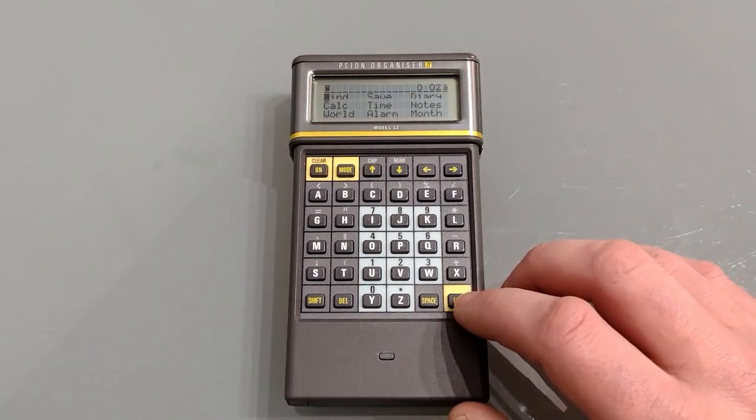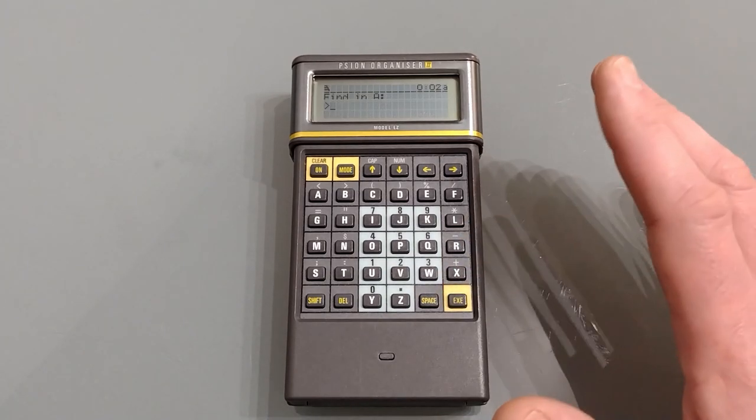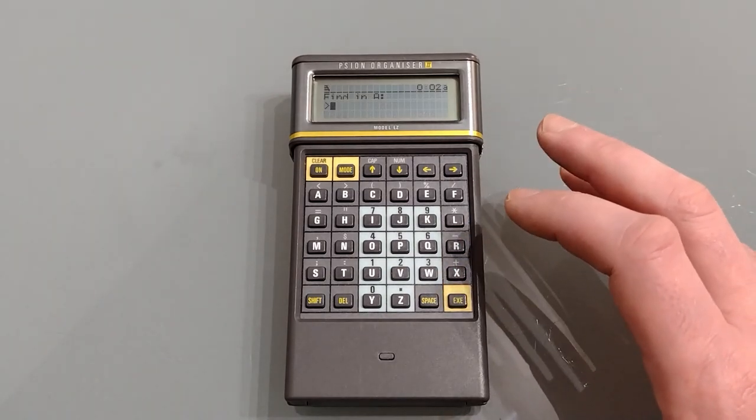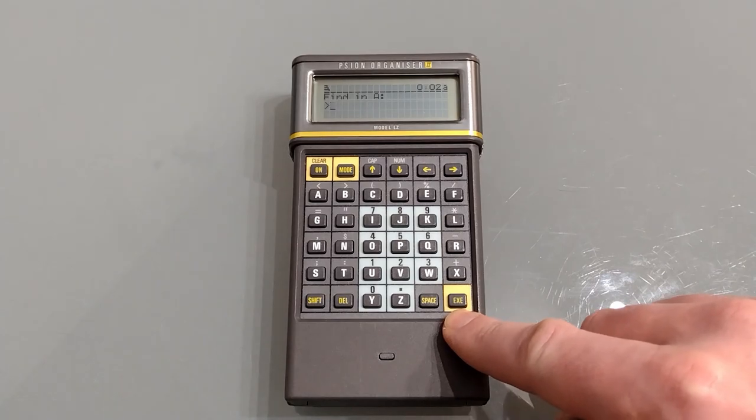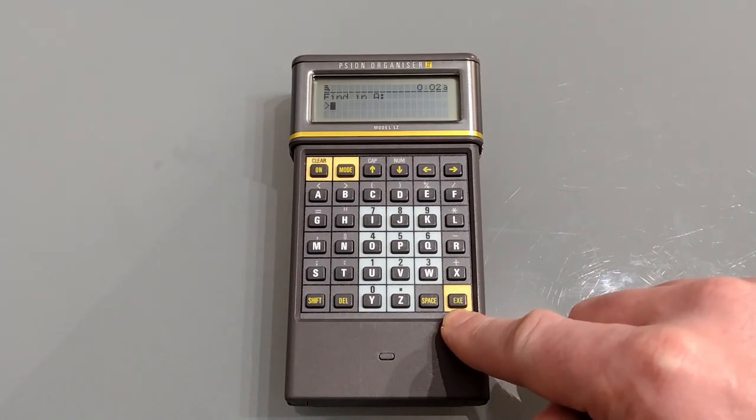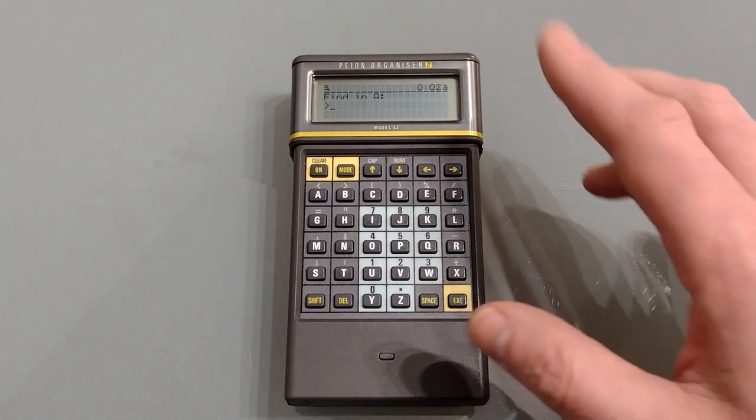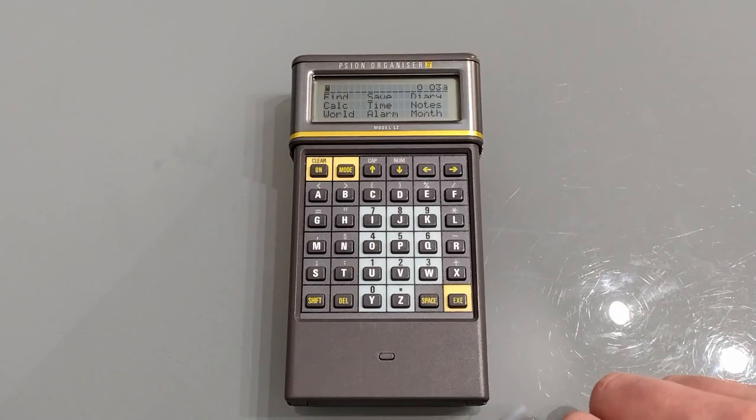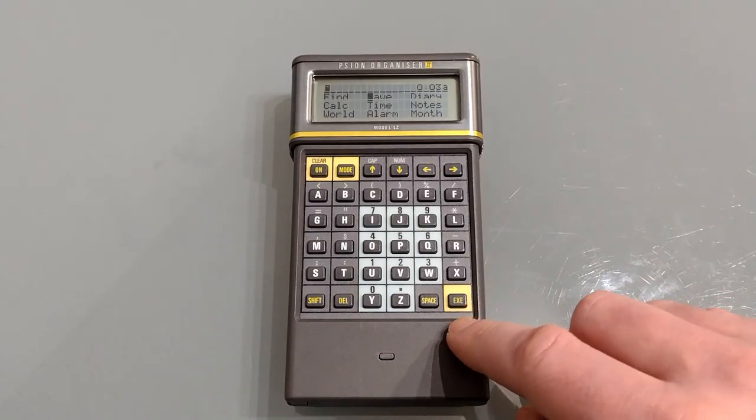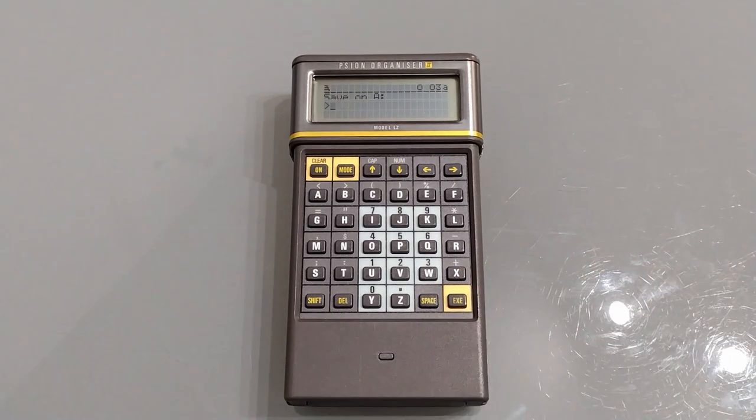Up first on the menu we have find. So find allows you to search through the database that's currently in. You can either simply press execute to scroll through any entries or you can put in a few letters and it will search the current database for them. In order to search for things we first need to save something.